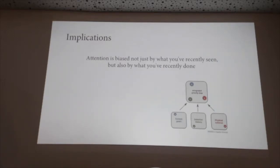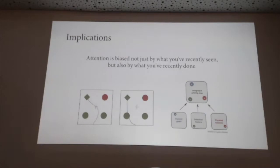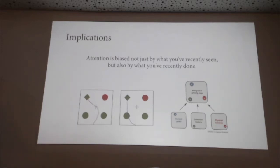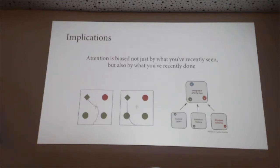What these data, along with other data, suggest is that attention is biased not just by what you've recently seen, but also by what you've recently done. By looking at trajectories at the individual trial level, if you want to understand something about history, don't just ask what kind of trial people experienced, but also ask what they actually did — how they performed on that trial. There are other instances of this too; the idea of post-error slowing goes back maybe 50 or 60 years.